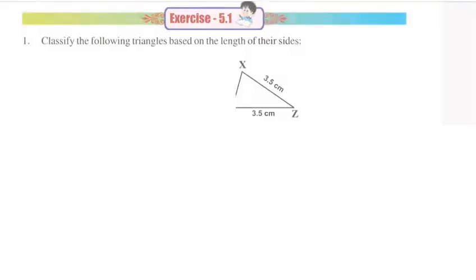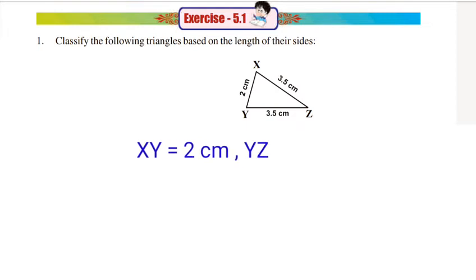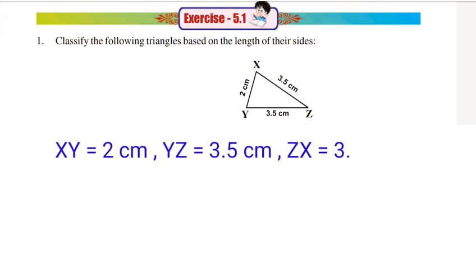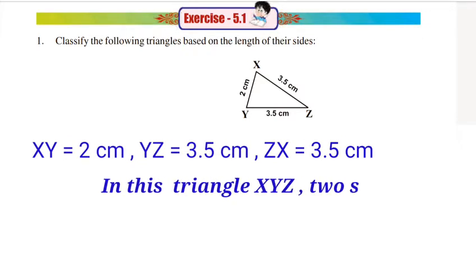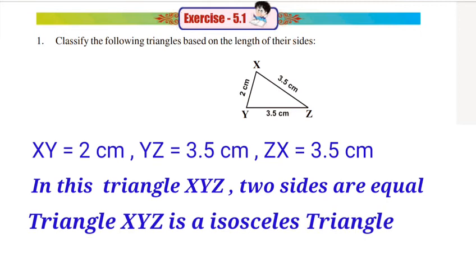Next, triangle XYZ. In this triangle, the side XY is equal to 2 cm, YZ is equal to 3.5 cm, and XZ is also equal to 3.5 cm. Two sides are equal, so this triangle is called an Isosceles Triangle.